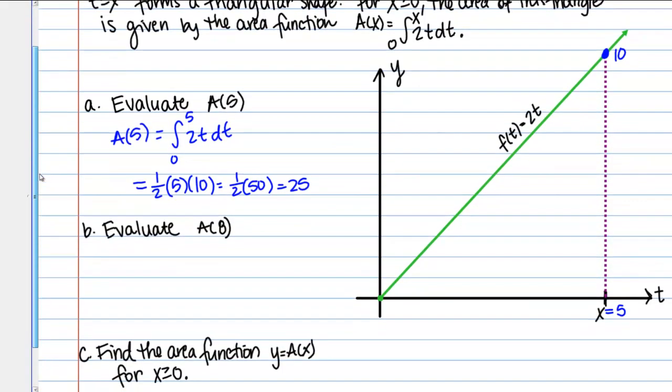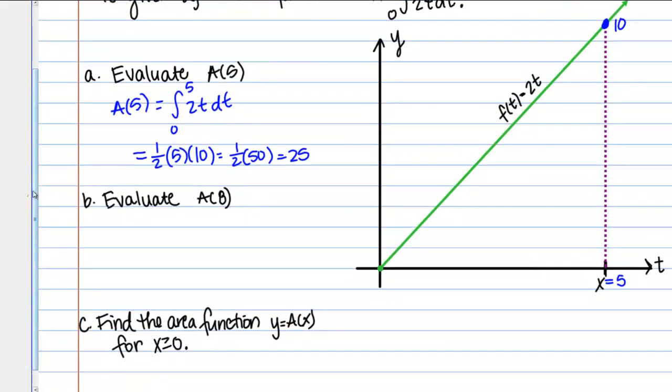Let's do the same thing to evaluate A(8). Now we're going to pretend that x has moved and now it's sitting at a t value of 8. Once again, to find the height of the triangle, I can use the fact that my function equals 2t. If I plug in 8 there, I'm going to get a value of 16. This function value here is 16, which gives me the height of my triangle.